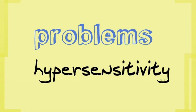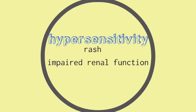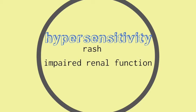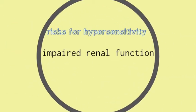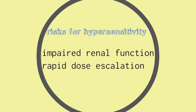Allopurinol has a problem of hypersensitivity in some patients, and that hypersensitivity can be as simple as a rash or impaired renal function, but it can be quite a severe illness at times. The risks of hypersensitivity are increased in patients with impaired renal function, increased if the dose of allopurinol is rapidly escalated, and in certain genetic backgrounds there is also an increased risk of hypersensitivity to allopurinol.